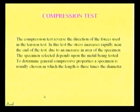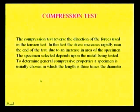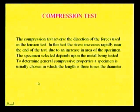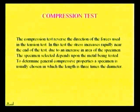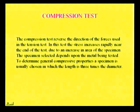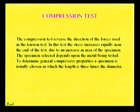The next one is the compression test. This is just a reversal of the tensile test — in the compression test, we reverse the direction of forces used in the tension test. In this test, the stress increases rapidly near the end of the test due to an increase in area of the specimen. The specimen selected depends upon the metal being tested. Generally, the compression test is developed on materials like wood and brick.